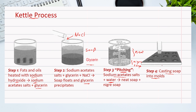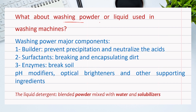What about washing powder or liquid used in washing machines? Although we refer to the washing powder used in washing machines as soap, it is actually a mixture of several components, and soap is only one of them.